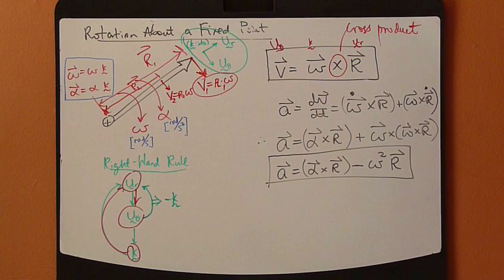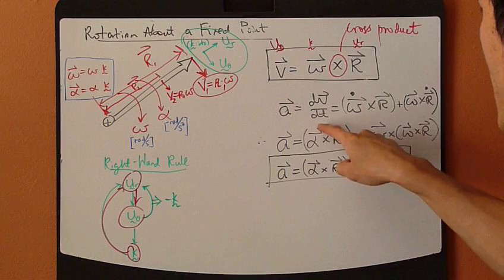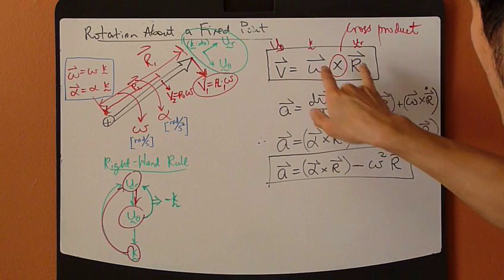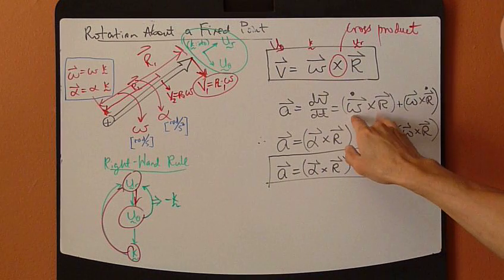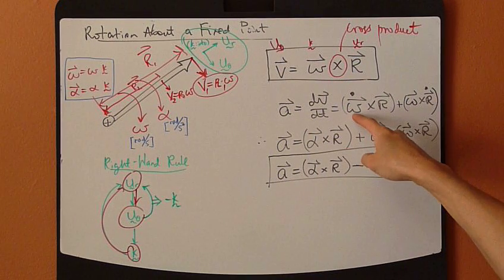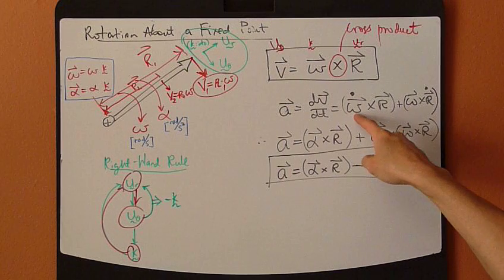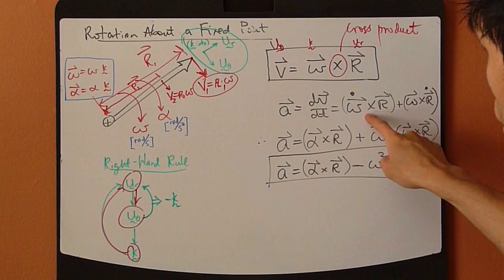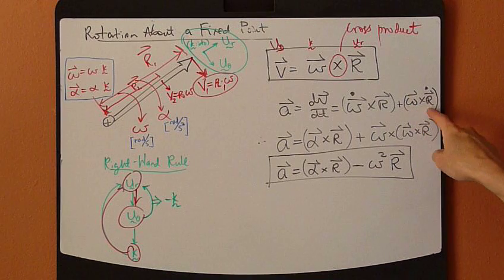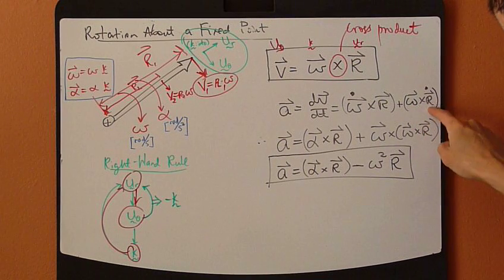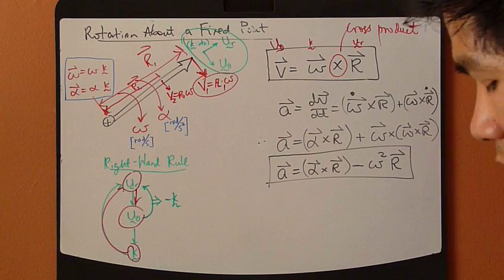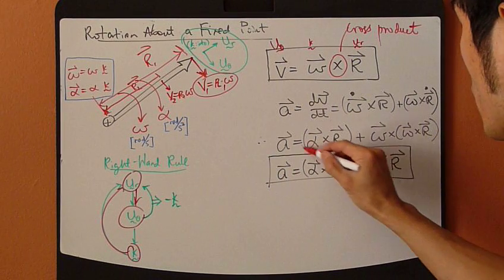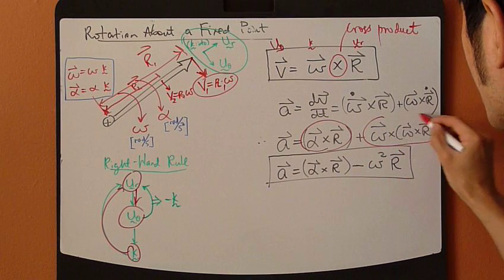For acceleration, use the definition dV/dt, and since this is a cross product, you need to use the chain rule. This gives omega-dot cross R plus omega cross R-dot. This turns out to have two terms.